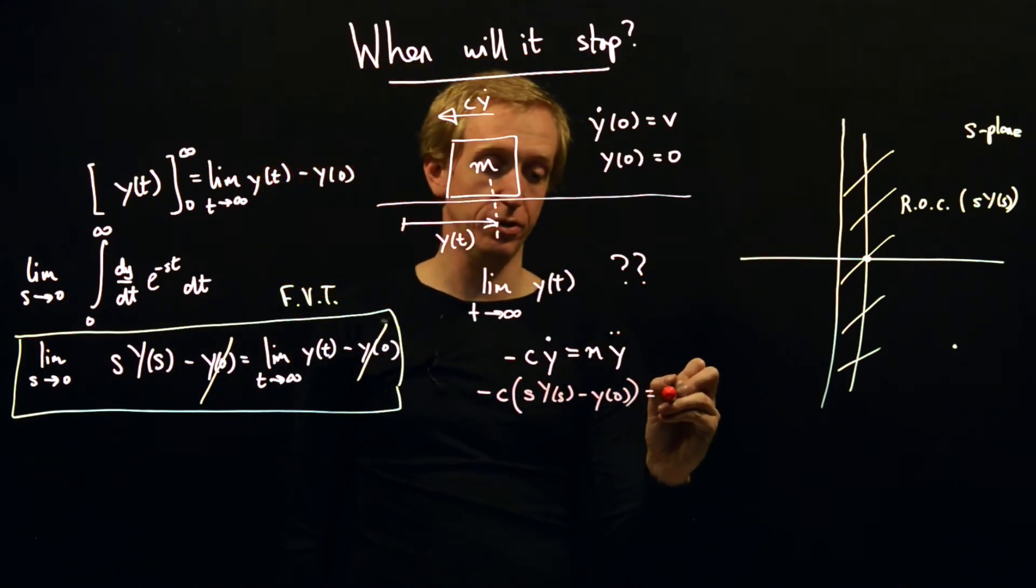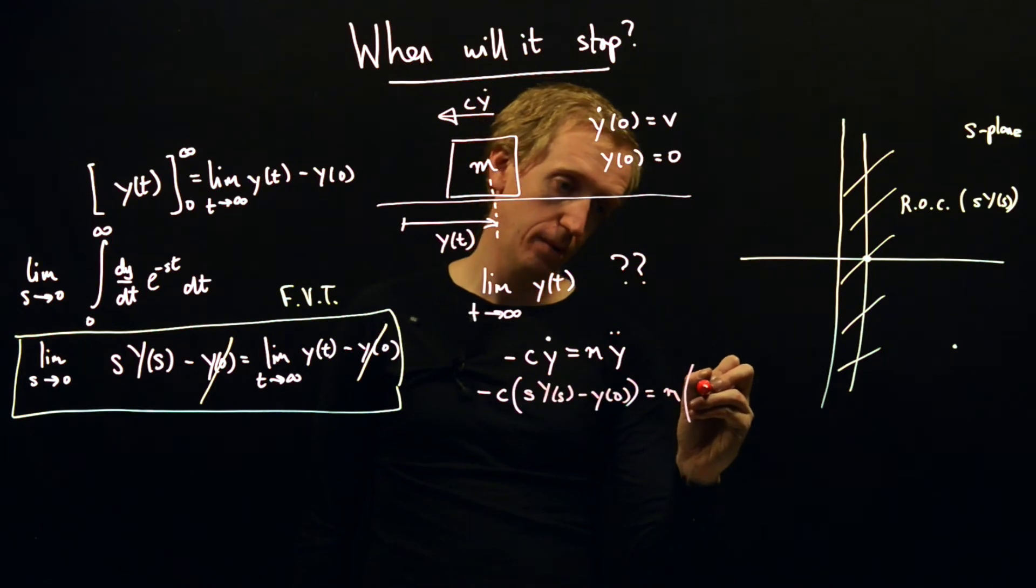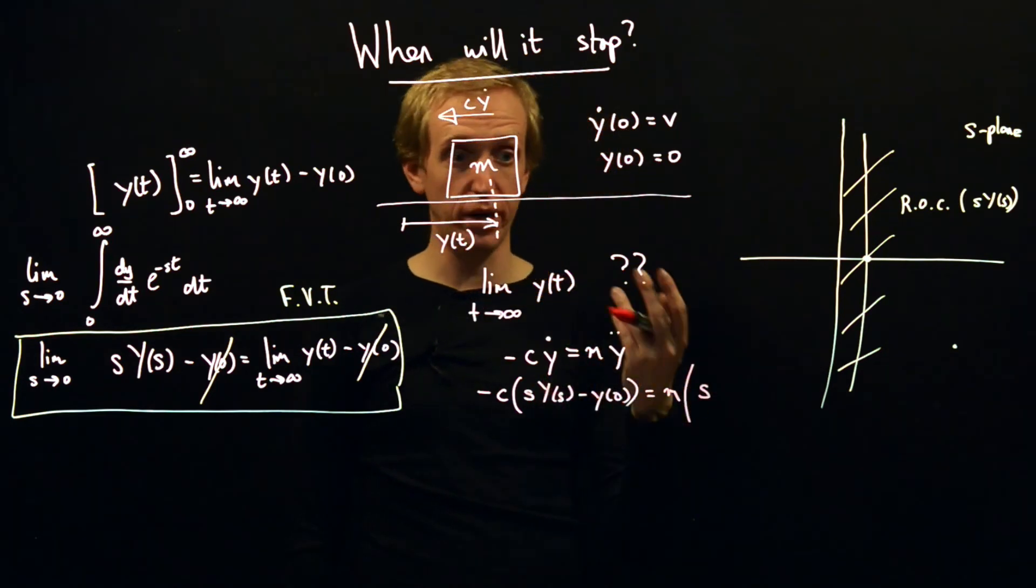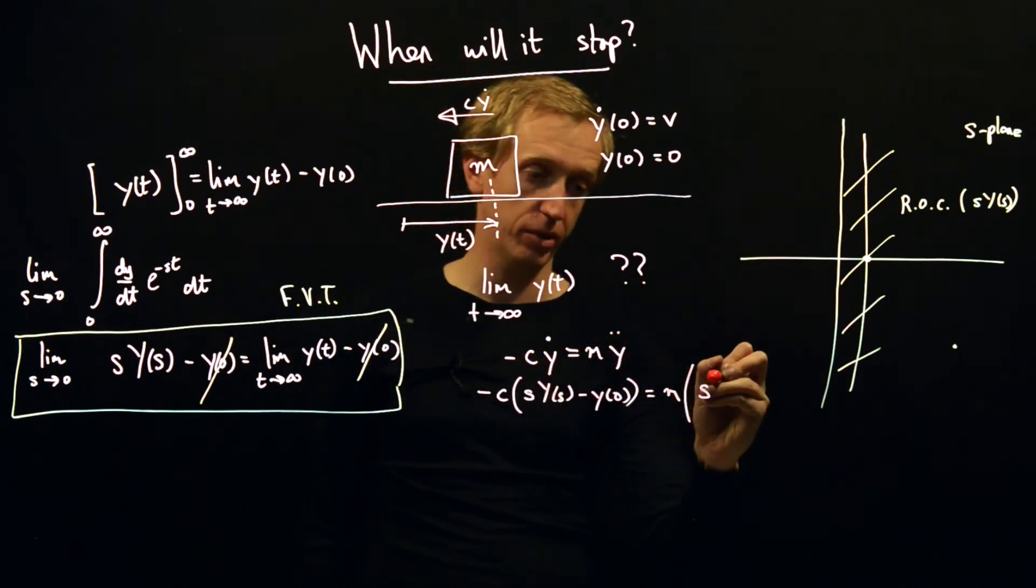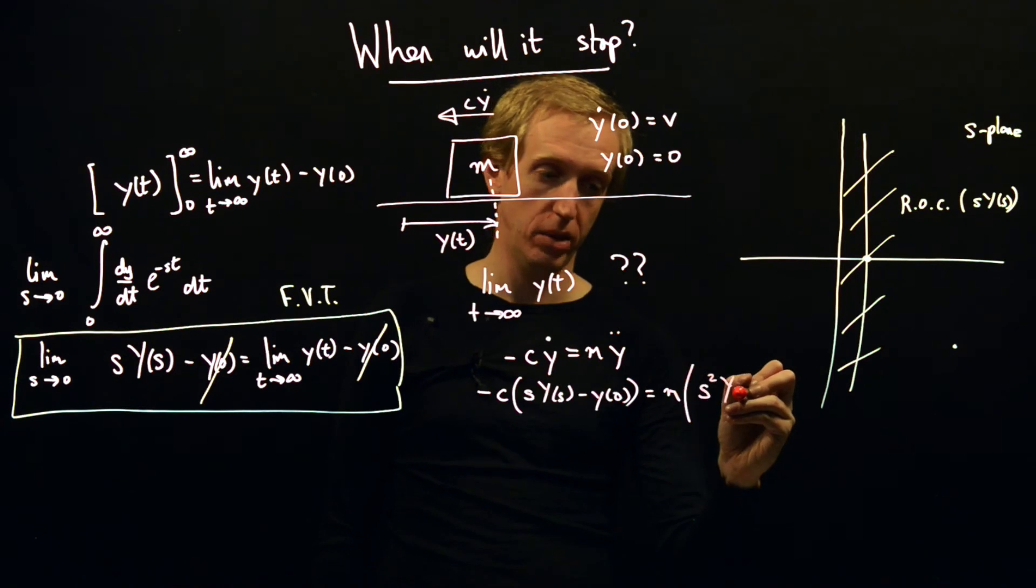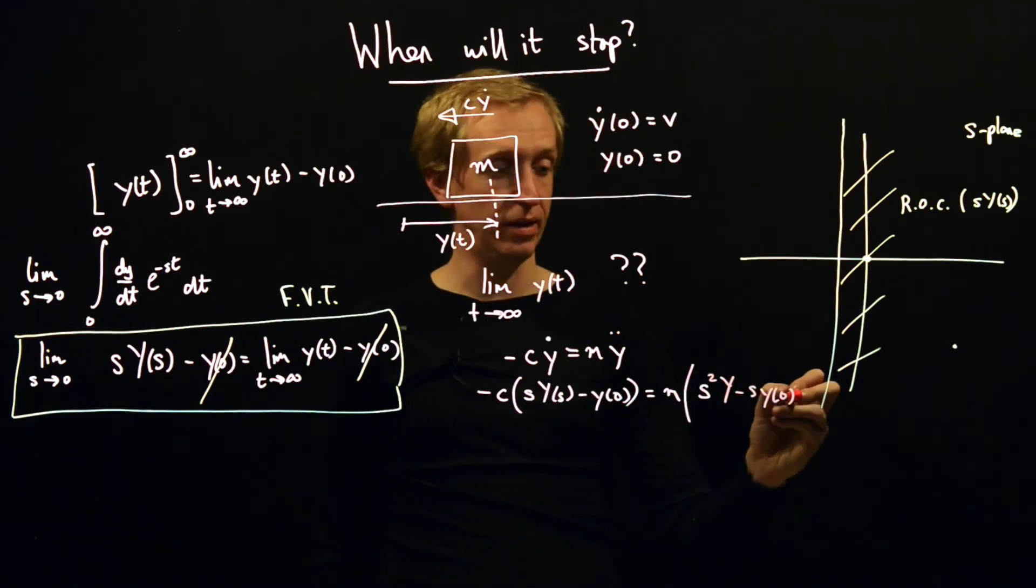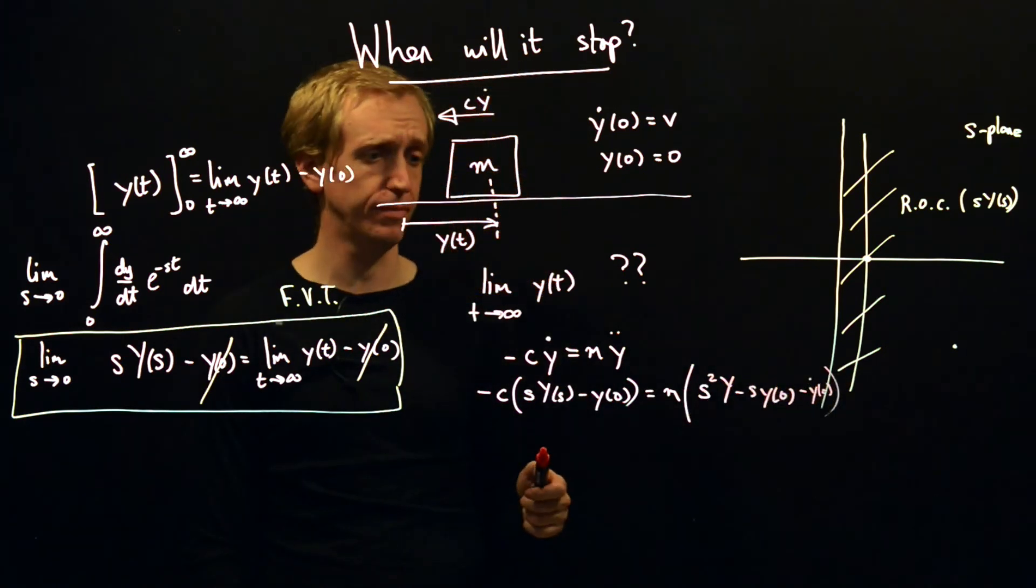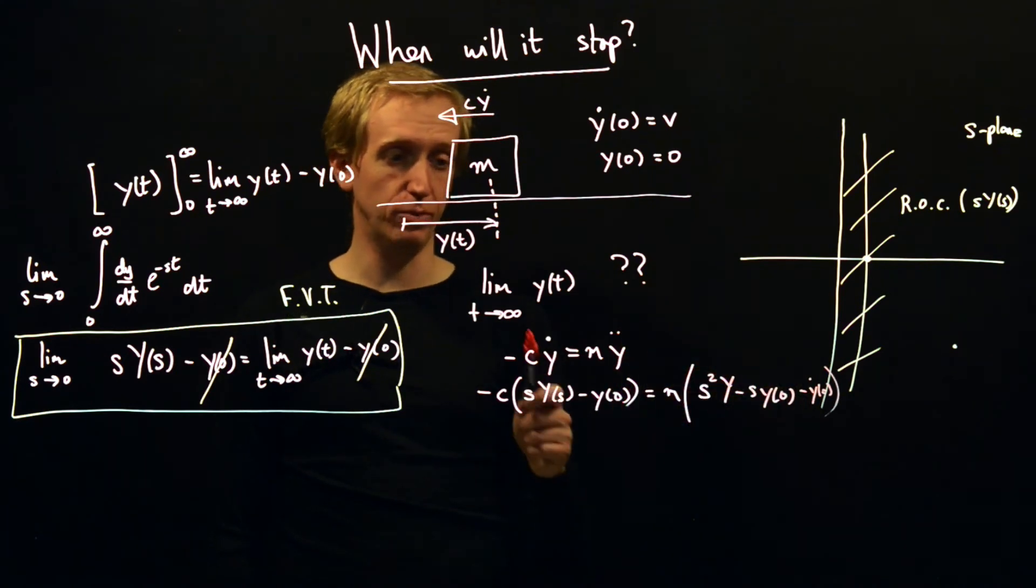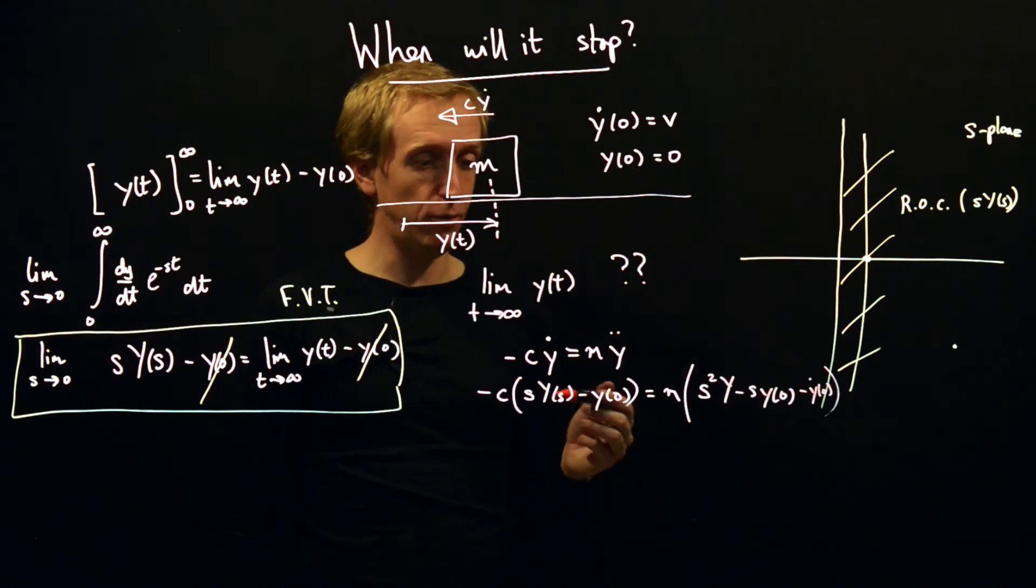And what is this equal to? Well, this is equal to m and now we need to do the Laplace transform of y double dot and this is equal to s times the Laplace transform of y dot, but the Laplace transform of y dot is given by this thing. So we've got an s squared y minus s*y of zero and then we also have a minus y dot of zero. So this is the Laplace transform of y double dot just by recursively applying that rule that we saw last time.